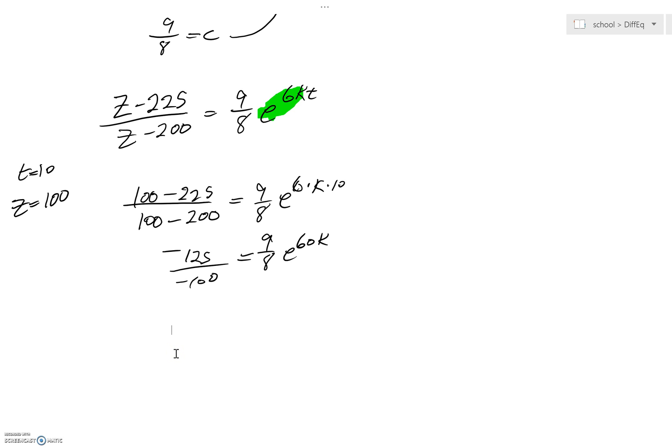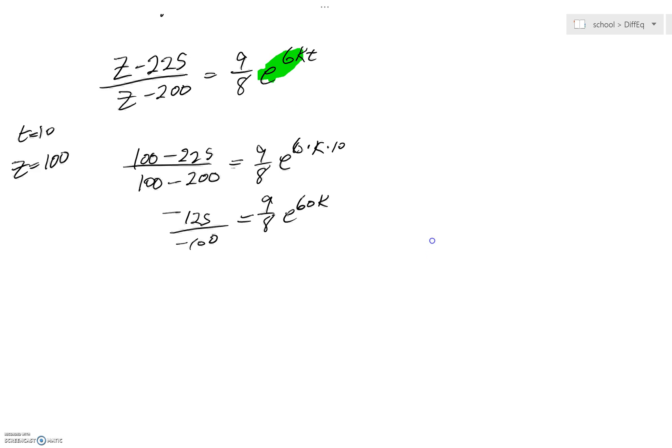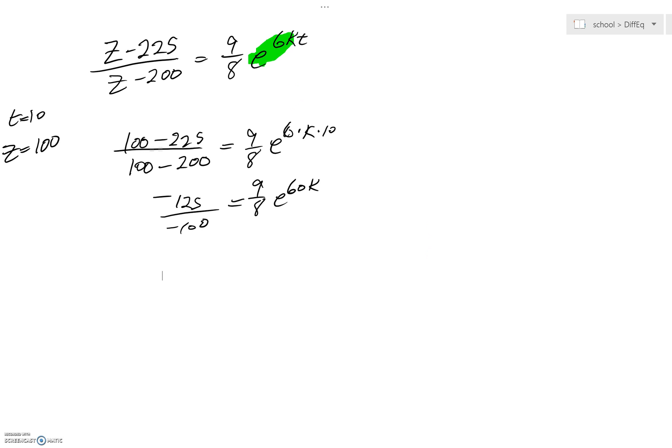Okay, picking back up where we left off on the video, we're going to continue to solve. We're looking for really a constant. Ultimately, I'd like to know what e to the 6k is.